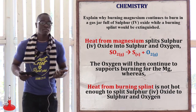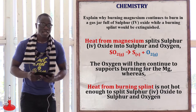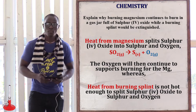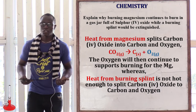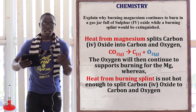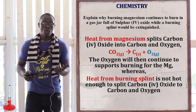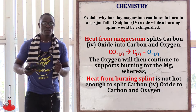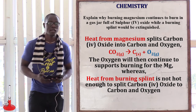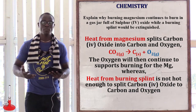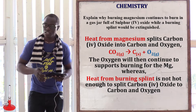The question can also be rephrased using carbon dioxide gas — asking why burning magnesium in a gas full of carbon dioxide continues to burn while the burning splint is extinguished. The explanation is still the same: the magnesium produces a lot of energy which breaks down the carbon dioxide to carbon and oxygen molecules. Magnesium uses those oxygen molecules to continue with combustion. The burning splint produces very low energy, cannot split the carbon dioxide, and so the carbon dioxide extinguishes the burning splint.